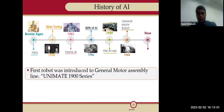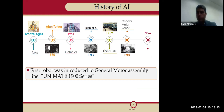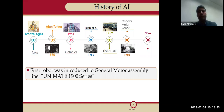In 1960, we had the first robot. Many people, when they hear about AI, start thinking about robots and robotics. The first robot was introduced to the General Motor Assembly. They called it AMET, and it had a series — starting with the 1900 series — after which they developed new series and new forms.